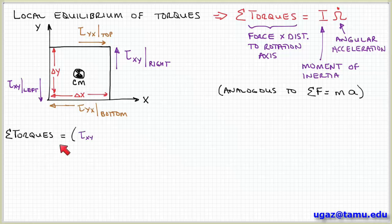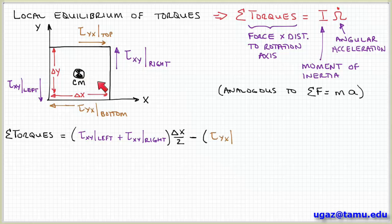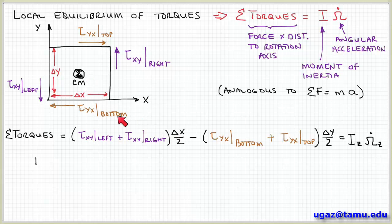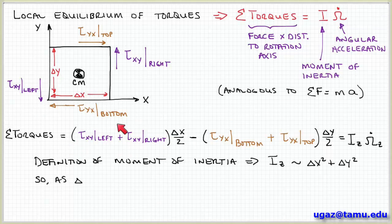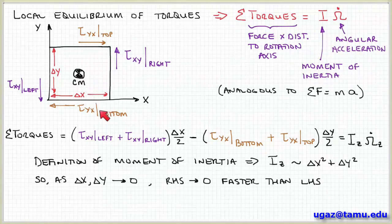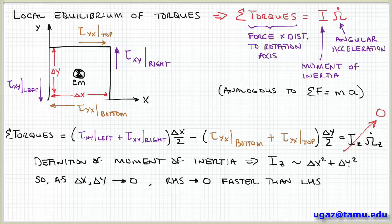Consequently I can write the sum of the torques as follows. Adding up first the left and right-hand side: tau_xy on the left-hand side plus tau_xy on the right-hand side, times the distance to the axis of rotation, which is delta x over 2. These are positive from the right-hand rule — if I point my fingers in the direction of this stress and wrap them around, my thumb points out of the screen, and the same goes for the stress on the left-hand side. Then similarly on the top and bottom, those two stresses times delta y over 2; applying the right-hand rule there, my thumb points into the screen, so I have a minus sign. So this is the sum of the torques, per unit area, equal to the moment of inertia times the angular acceleration.